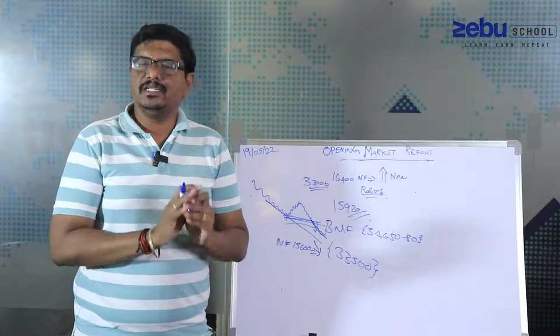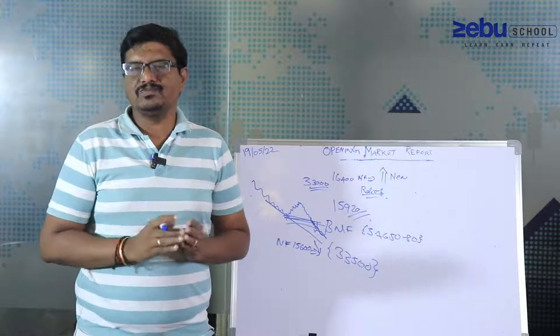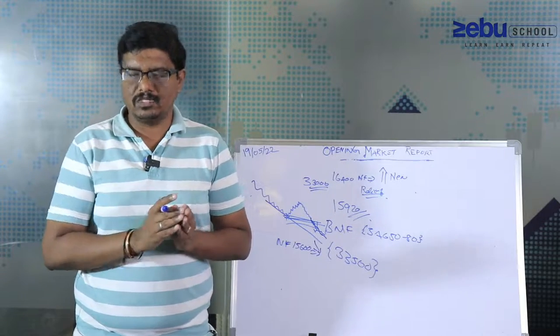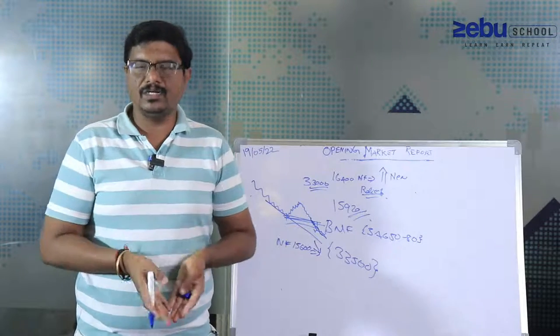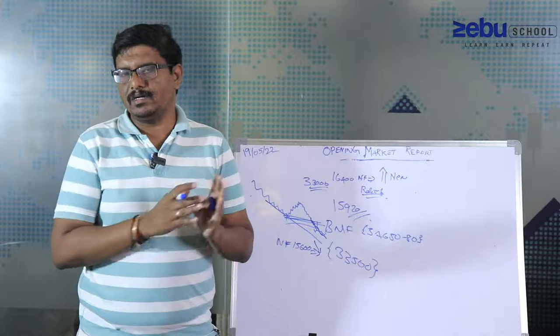For me the next two to three days is very clear, looking at the FII quantum of selling. If you look at last month, the entire selling was around 40,000 crore, and today is only 19th of May.